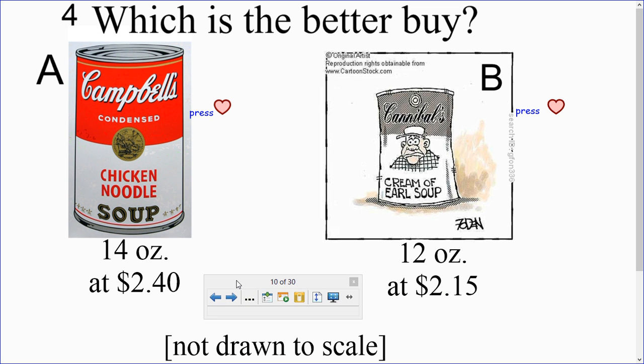Which do you think is the better buy? Is it A, Campbell's Condensed Chicken Noodle Soup for 14 ounces at $2.40? Or is it B, Cannibal's Cream of Earl Soup? Cream of Earl Soup? Cannibal? Hmm. I wonder what that tastes like. Well, 12 ounces at $2.15. So, which do you think is the better buy? Well, both cans look about the same size. The prices are pretty similar. Can A is a little bit bigger and so is the price. Can B is a little smaller and so is the price.